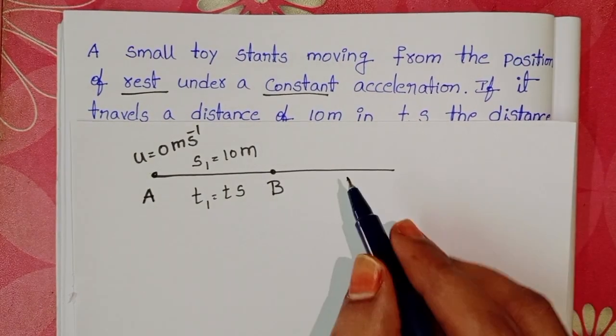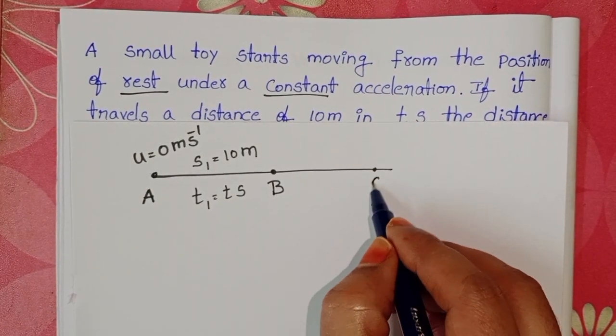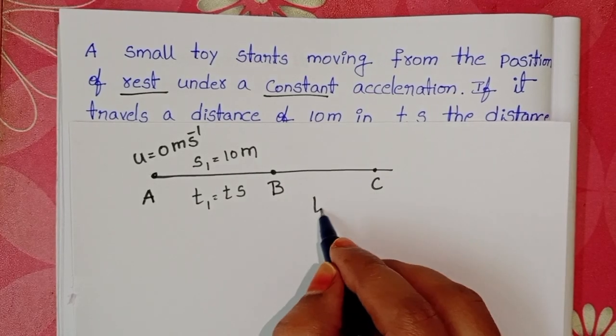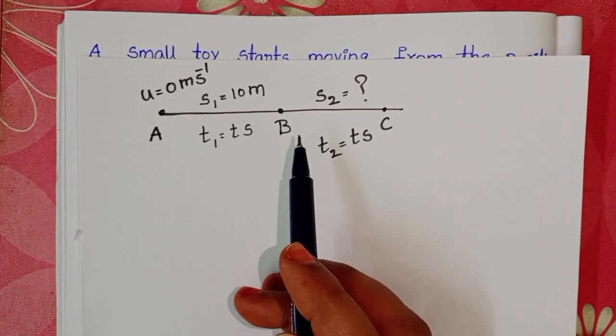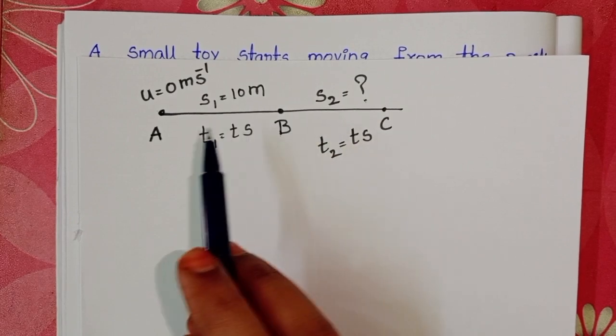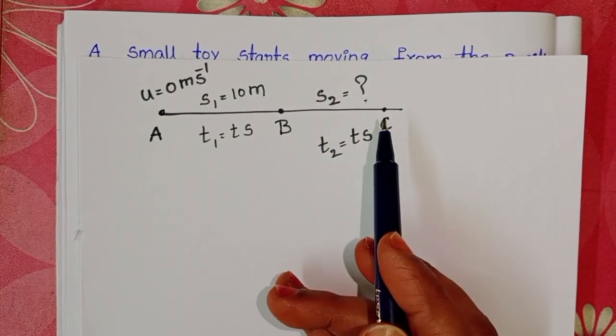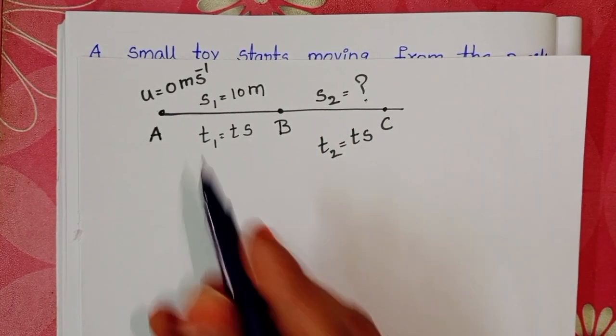Here we have to calculate the distance travelled by the toy in the next t-seconds. First to calculate the constant acceleration of the toy. The toy is moving with constant acceleration, so take equations of motion.